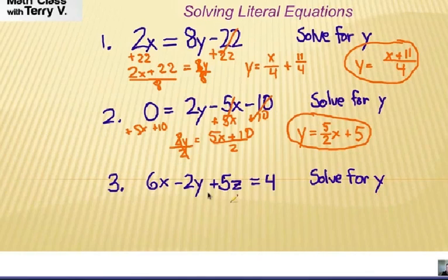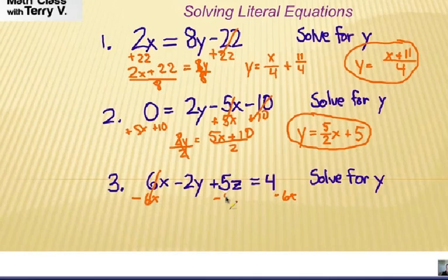And in my last example, solve for y. Notice here is the y there, so let's go ahead and subtract 6x from each side, and subtract 5z from each side. That's going to get a little messy, but that's alright. I'm going to have negative 2y equals 4 minus 6x minus 5z. Divide both sides by the negative and the 2.